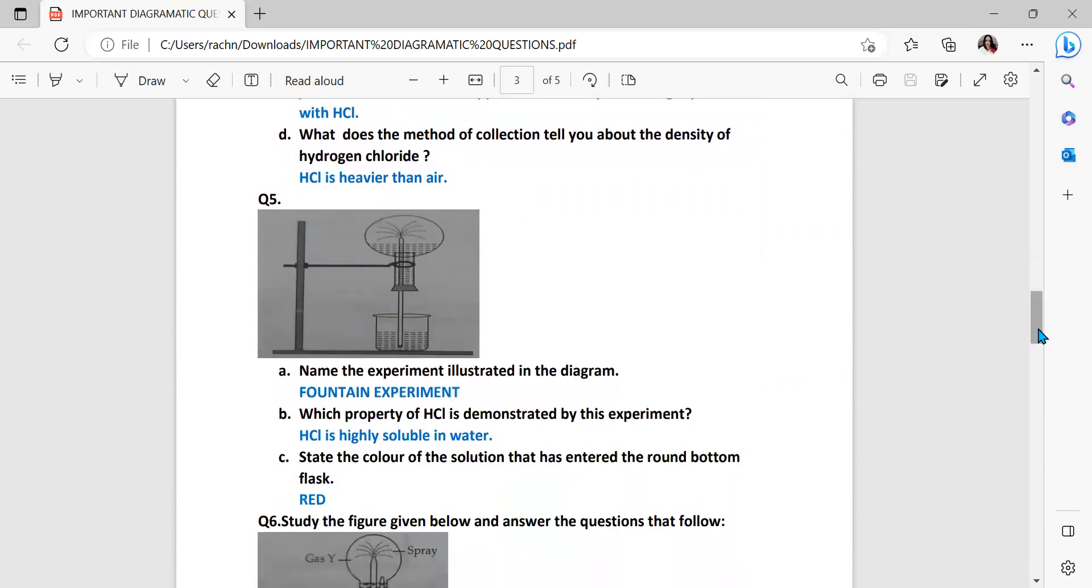Question number five. You can see this is a fountain experiment. Name the experiment illustrated in the diagram - fountain experiment. Which property of HCl is demonstrated by this experiment? HCl is highly soluble in water. State the color of the solution that has entered the round bottom flask. Your round bottom flask, the solution which has entered is red in color because it is the property of acidic gases or acids that they turn blue litmus solution red.